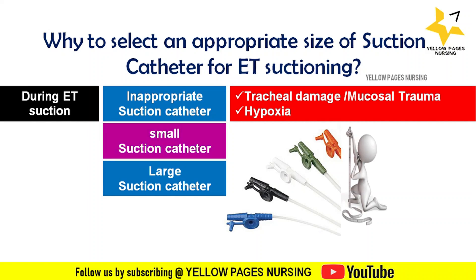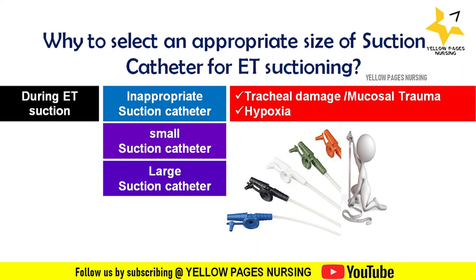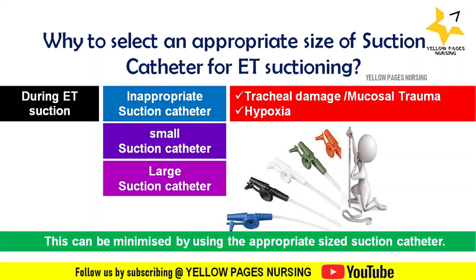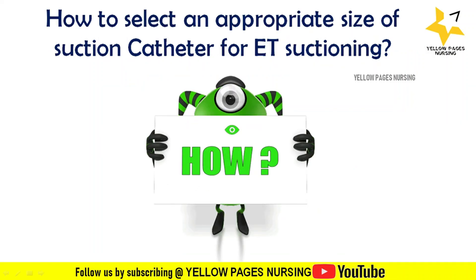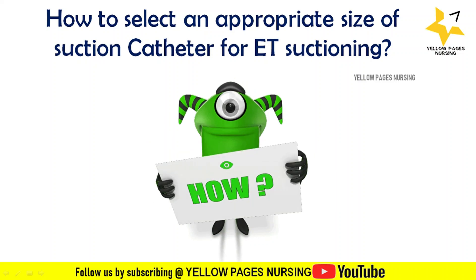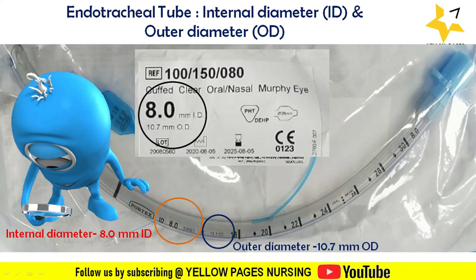If the catheter is too small, it will not adequately remove secretions, and repeated attempts will be necessary, which has been shown to damage the trachea. If a large catheter is used, it will occlude the tracheal tube, causing hypoxia. Using an appropriate size suction catheter minimizes these risks and limits mucosal trauma.